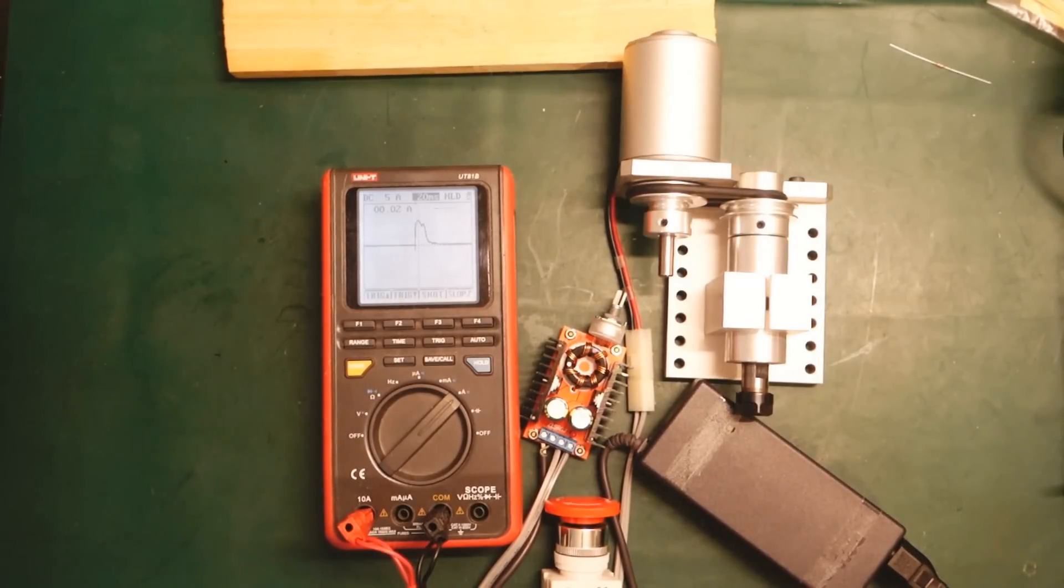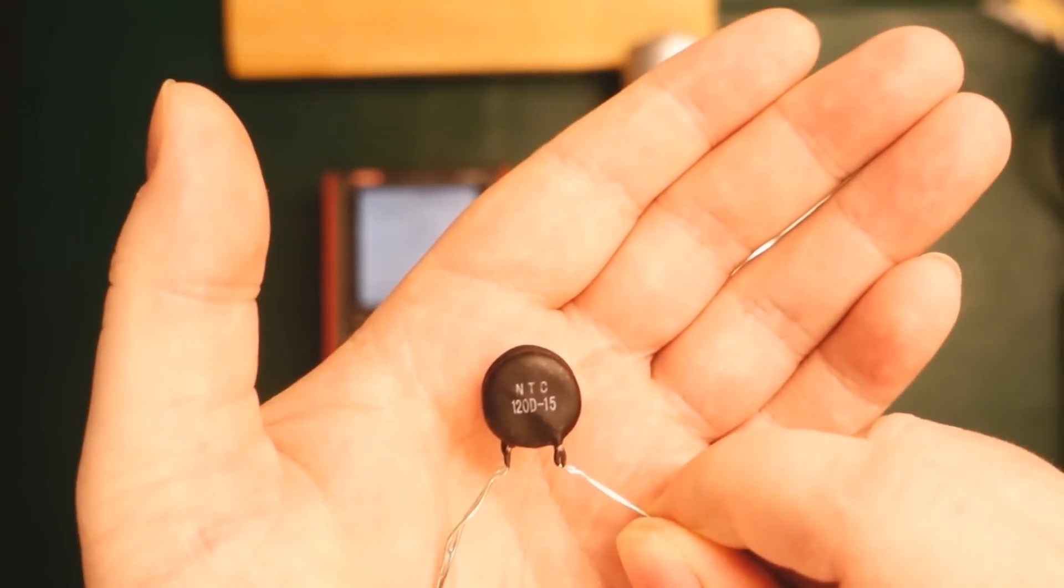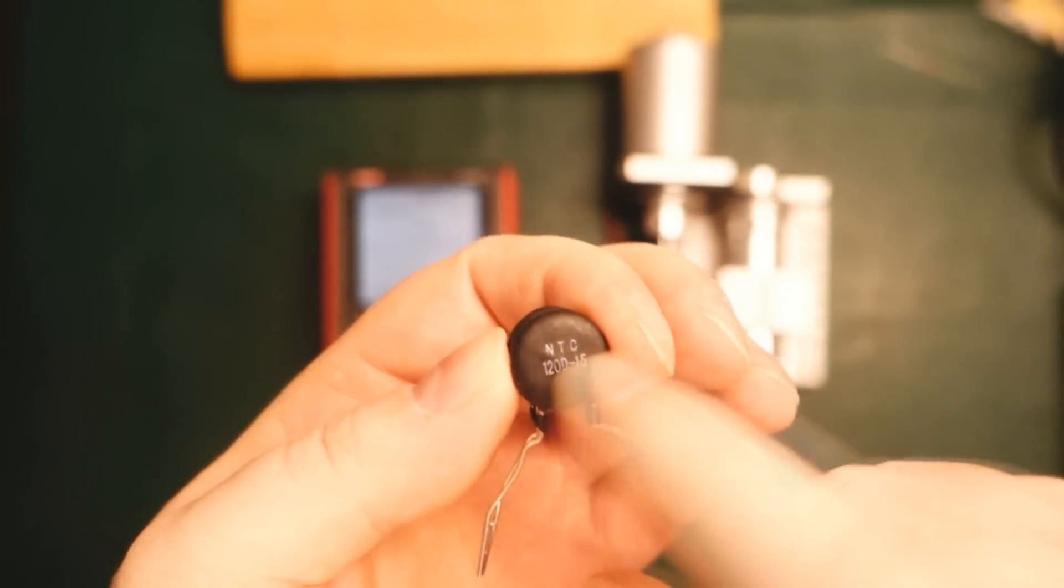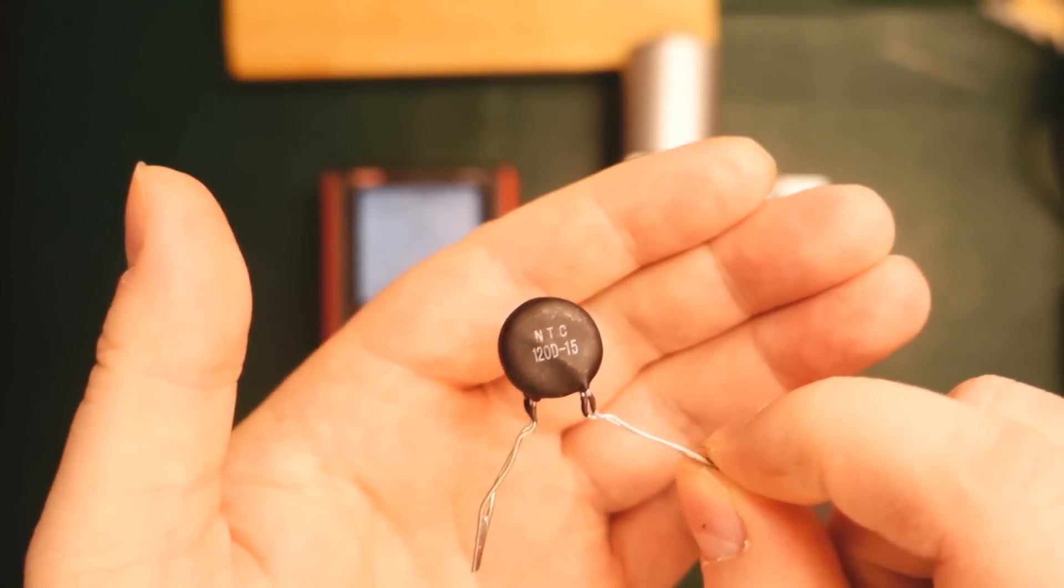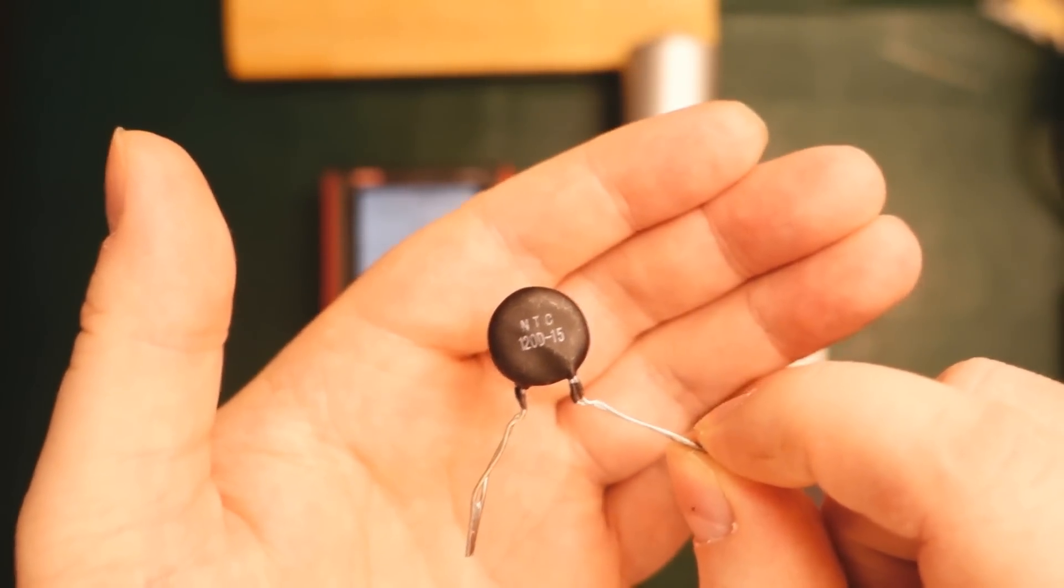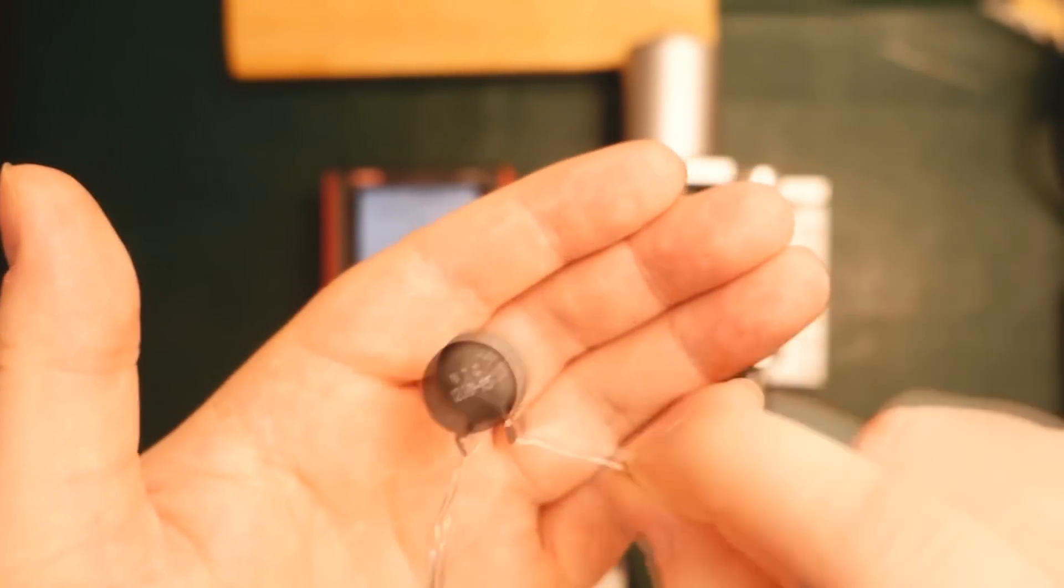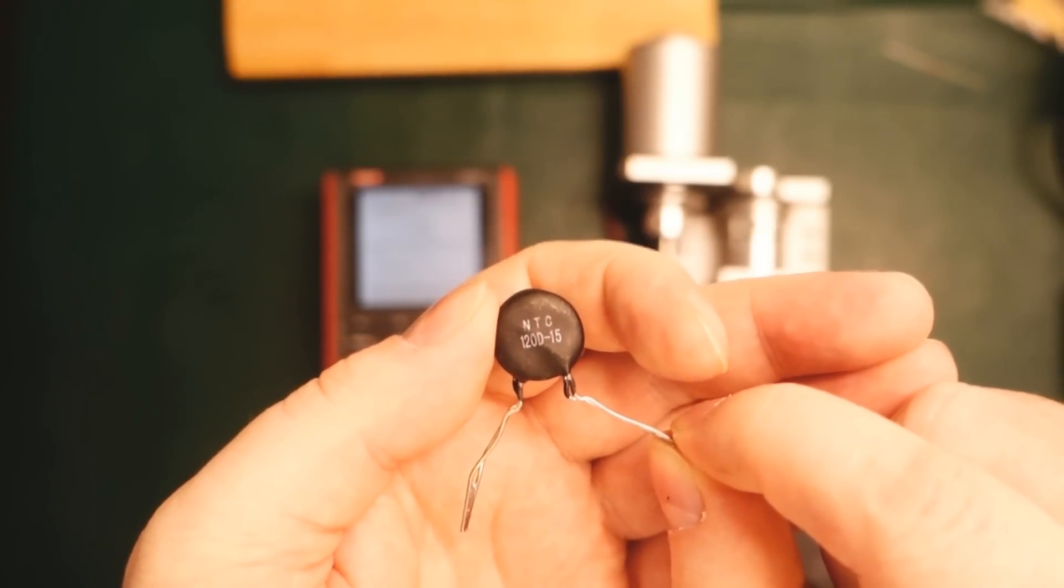Let's try add some of these NTC thermistors here in series with the load. I'm just going to do two in parallel because these are probably 120 ohm is a little bit too high. It will take a long time for the resistance to go down, or well it will take several seconds. So just take two in parallel here and let me try connect this and then we'll have a look again.